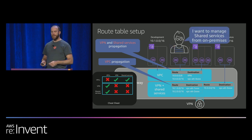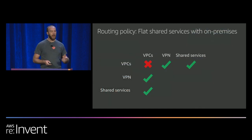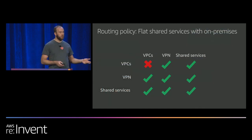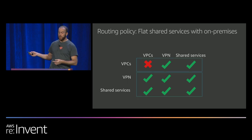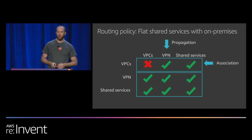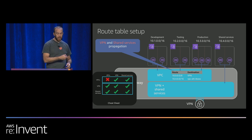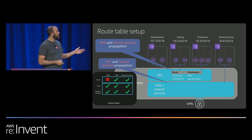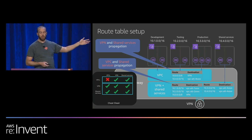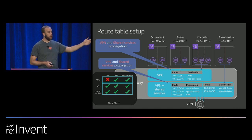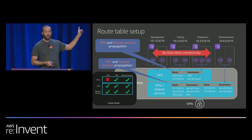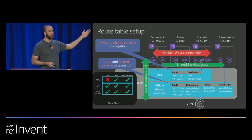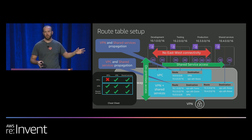Someone might say they can't manage shared services from on-prem. Let's change the policy — from VPN we want to access shared services, so we make a more permissive policy for those route tables. We still have two policies, so we create the same two route tables. We propagate the shared services route and the VPN route into the route table associated with VPN and shared services. Now we can access shared services via VPN, we can't go between VPCs, but we can talk to shared services and VPN. This is roughly 80-90% of the way for most customers.